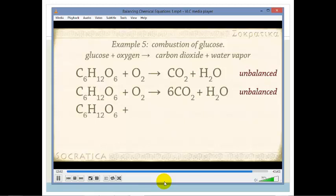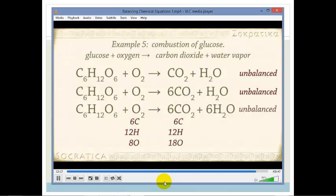C6H12O6 plus O2 yields 6CO2 plus 6H2O. So on the left we still have 6C, 12H and 8O. On the right we have 6C, 12H and 18O.